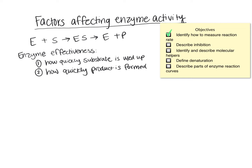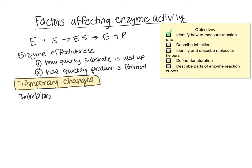Now that we can measure how quickly an enzyme is working, we can start looking at how to change that factor. There are two ways we can do this. First, we're going to talk about non-permanent or temporary changes to an enzyme's activity. We're going to start with inhibitors. Inhibitors are going to prevent the enzyme from doing its job — in other words, they're going to decrease enzyme activity. There are two types of inhibitors we will talk about.